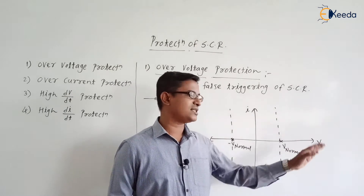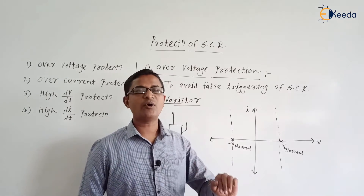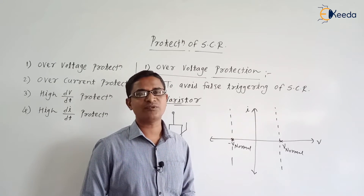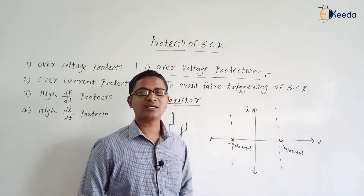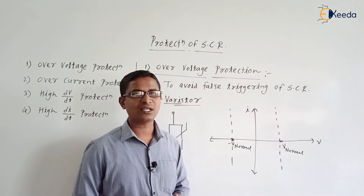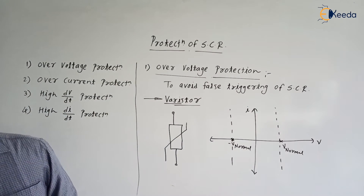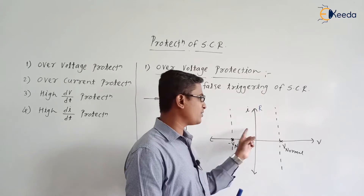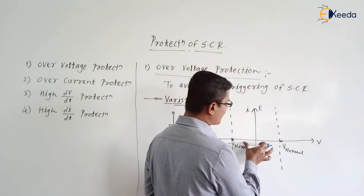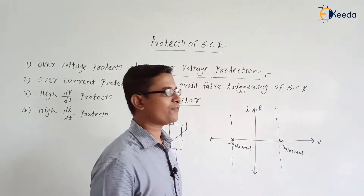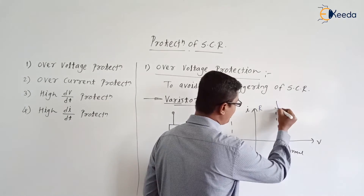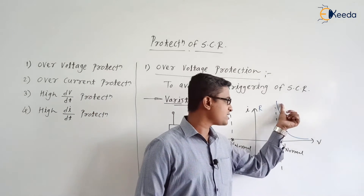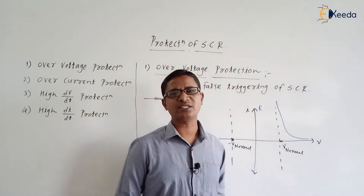As the voltage increases above the normal working or rated voltage, the resistance of the varistor falls suddenly, and the current flowing through the varistor increases suddenly. We can draw both a resistance versus voltage curve and a current versus voltage curve. During normal working voltage, resistance is infinite — coming from infinity. As the voltage becomes abnormal, the resistance of the varistor falls suddenly.